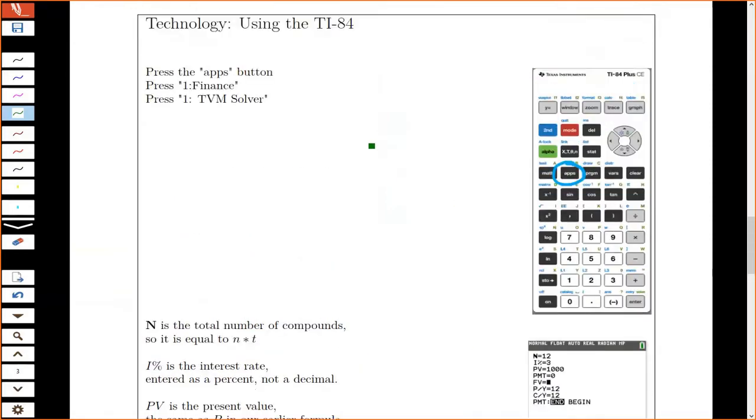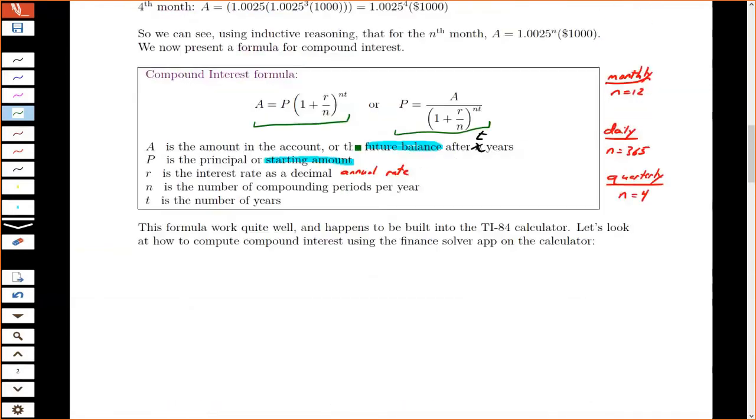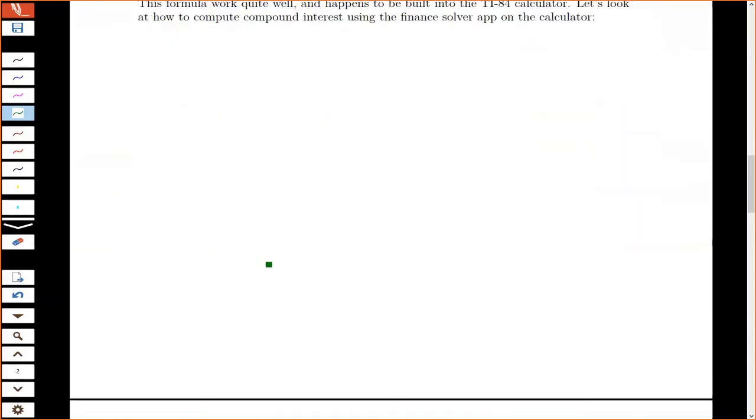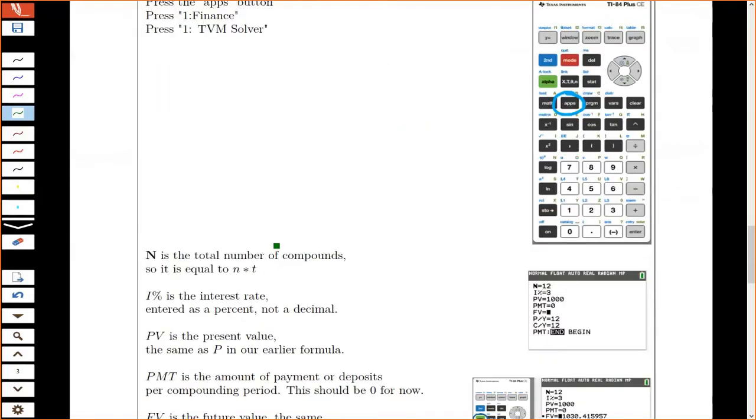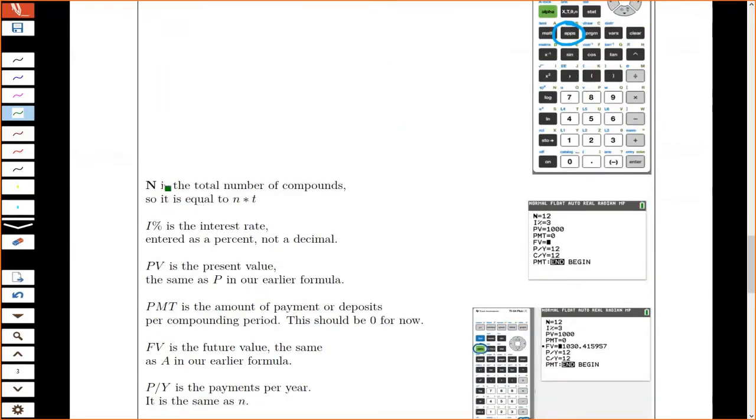Now, there are some differences between the symbols that we had up here when we do formulas and the symbols when we're entering in the calculator. Here they have this big capital N, and N is actually, the capital N is equal to little n times T. It's the total number of compounding periods.